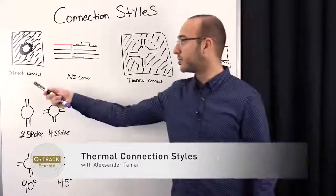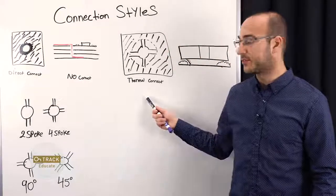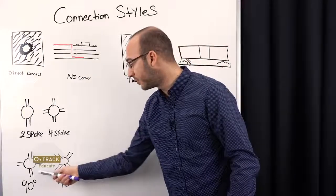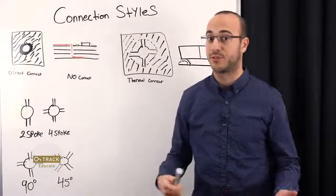We're going to talk about Direct Connect, No Connect, and mainly Thermal Connect. We're going to talk about why we have two spokes versus four spokes, and why we have 90 degrees versus 45 degree angled spokes.